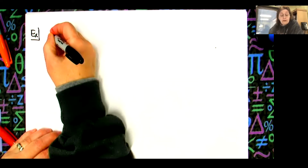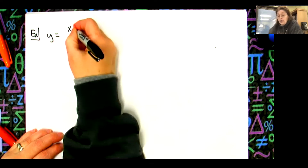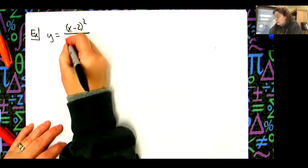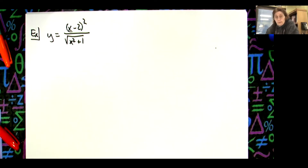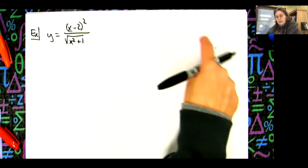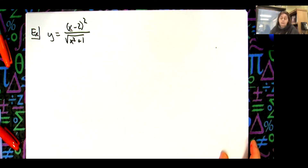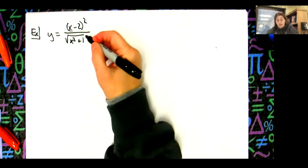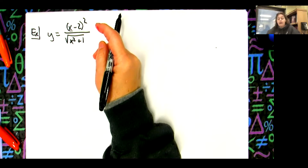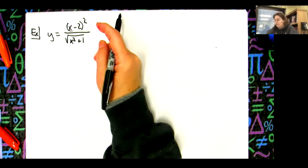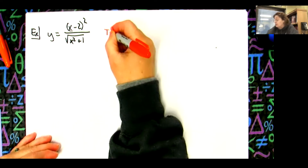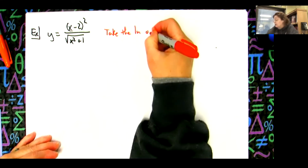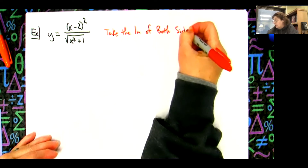Let's suppose we have y equals (x minus 2) squared all over the square root of (x squared plus 1), and I ask you to take the derivative. On a written test, when I want to force you to use logarithmic differentiation, I'll say 'find the derivative using logarithmic differentiation,' so you can't use any other method. What I want to do is break this down to make it easier — I'm going to take the natural log of both sides.